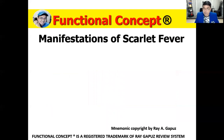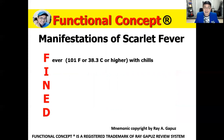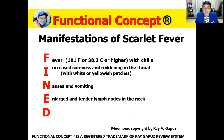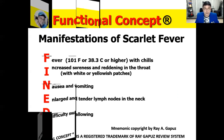What are the different manifestations of scarlet fever? Remember the code FIND. F: fever that's high with chills, approximately 101 degrees Fahrenheit or 38.3 degrees centigrade or higher. I: increased soreness and reddening in the throat with white or yellowish patches initially, then when those peel off, they reveal the strawberry-colored tongue. N: nausea and vomiting and large, tender lymph nodes in the neck. D: difficulty swallowing, because of the inflammation of the mucosal linings in the throat.